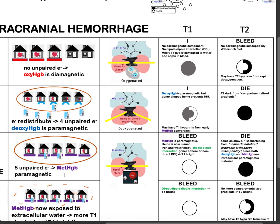Next, early subacute: methemoglobin is paramagnetic with five unpaired electrons. The heme is now planar-shaped, allowing non-direct dipole-dipole interaction. Therefore, it becomes T1 bright. There is still an intact cell wall, so there is still presence of compartmentalization of the gradient. Therefore, T2 signal remains dark.